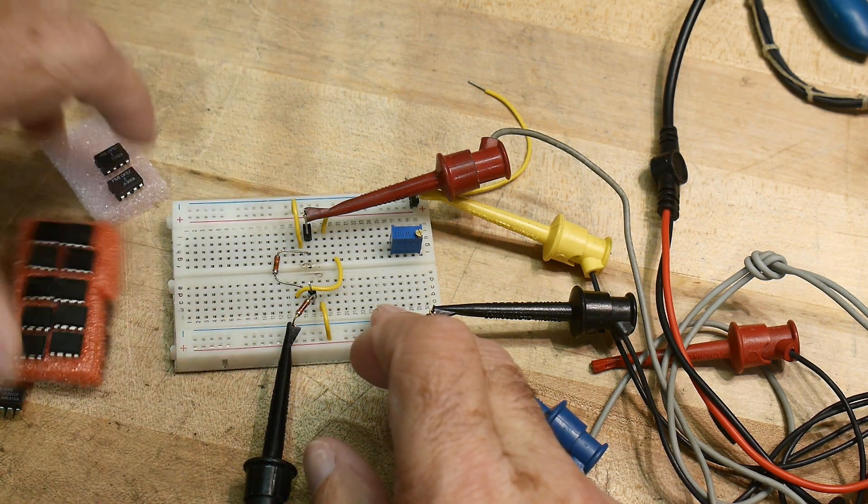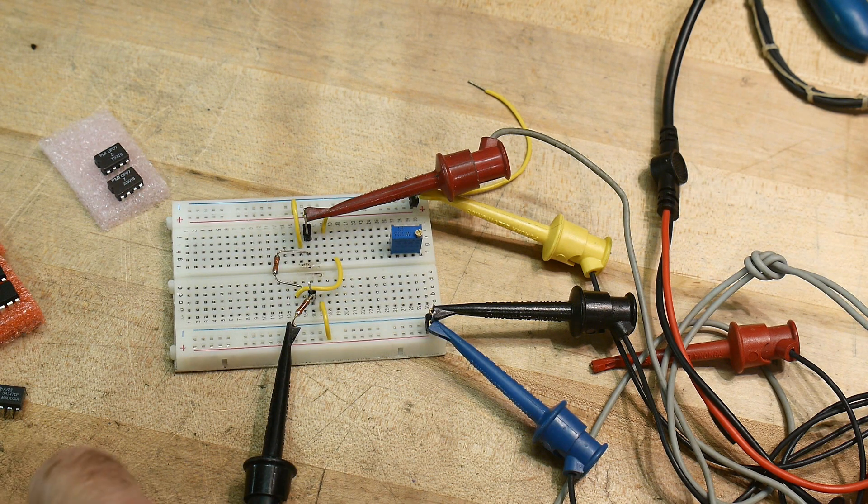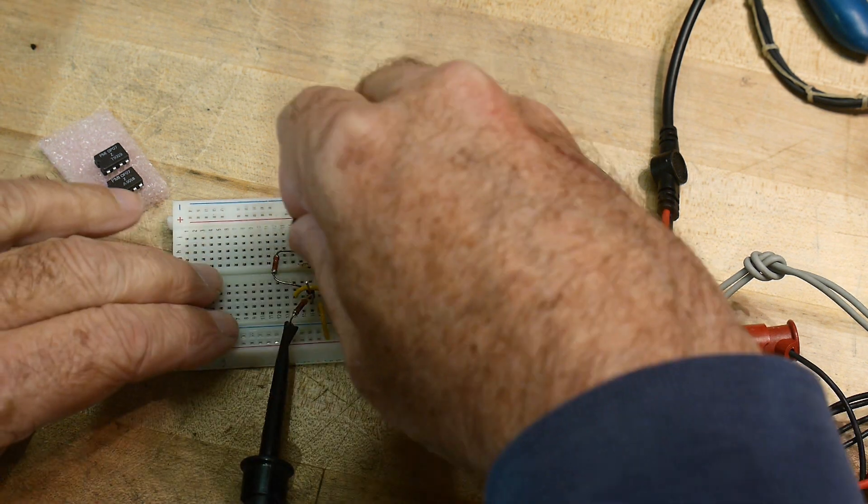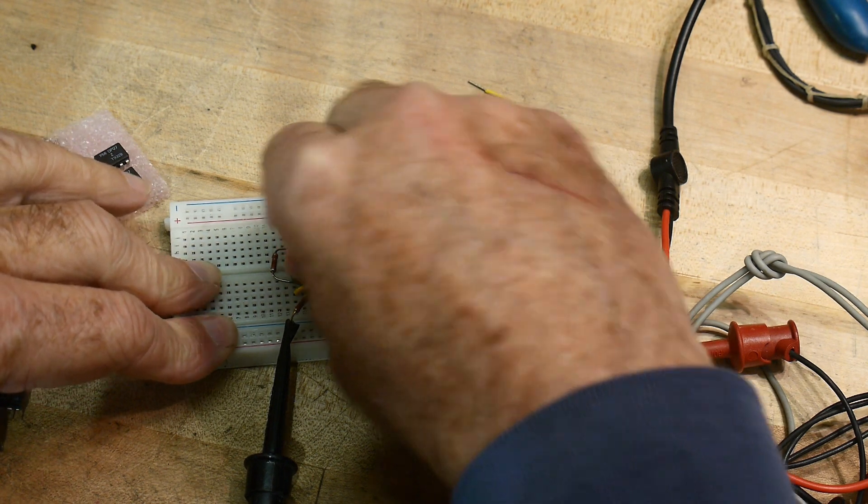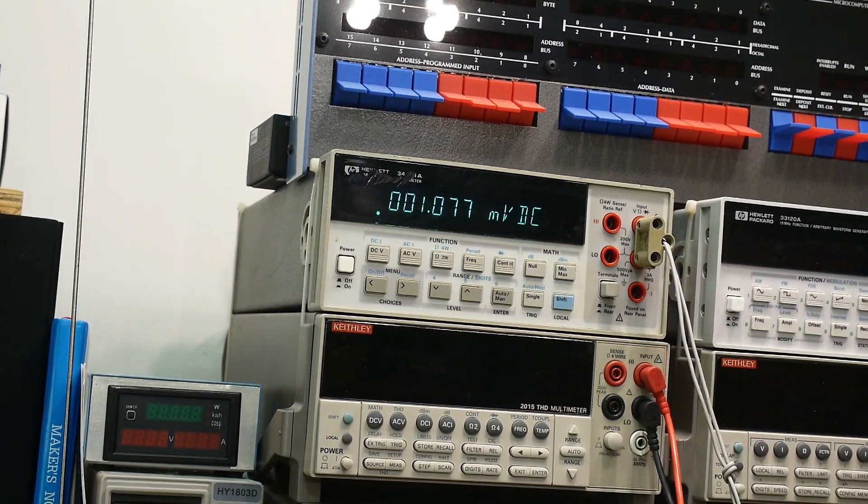All right, and then let's get one of our fake OP07s and let's put one of those in. And let's see what it does. And it's between one and five millivolts. So again, these are just junk parts.